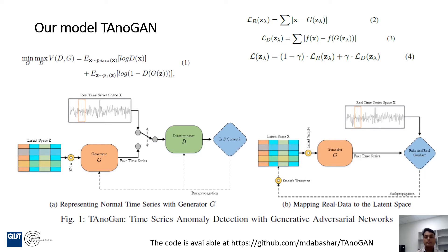In the second part, the real data is mapped to the latent space using inverse mapping. The latent space is then used to reconstruct the real data, and the difference between the reconstructed data and the real data is used to identify anomalies.